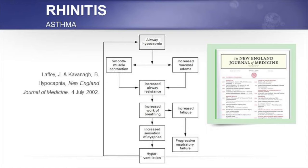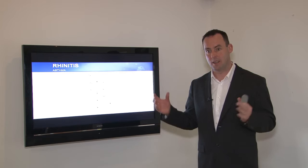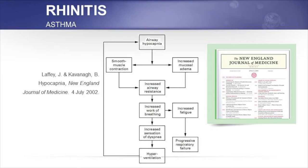This diagram from the paper looks at the effect of hyperventilation, and how this contributes to airway hypocapnia, which in turn causes smooth muscle of the airways to constrict. More mucus is released into the airways, possibly to calm inflamed tissue. Both smooth muscle contraction and increased mucus increase airway resistance, which increases the work of breathing. As the airways become narrower, you feel you're not getting enough air, so you breathe harder — increasing the sensation of breathlessness, which feeds back into hyperventilation and completes the cycle.